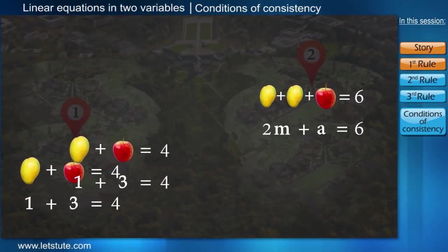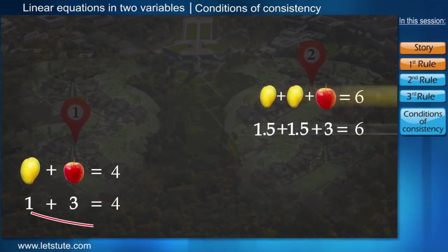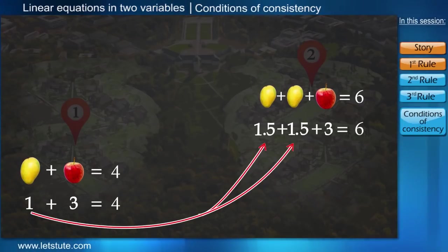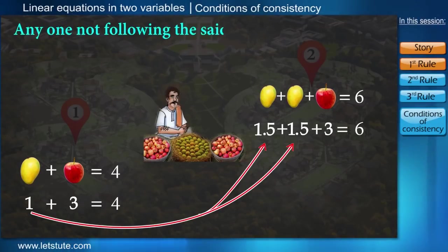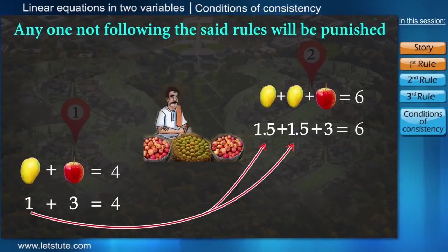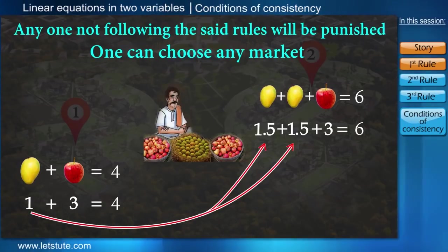The prices once set cannot be changed to avoid duplication. And so no single individual can sell his products in both the markets by changing the price. Any individual not following the said rules will be punished. Individuals had the freedom to choose the market whichever was favourable to them.